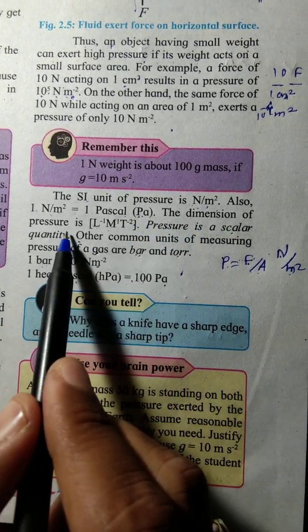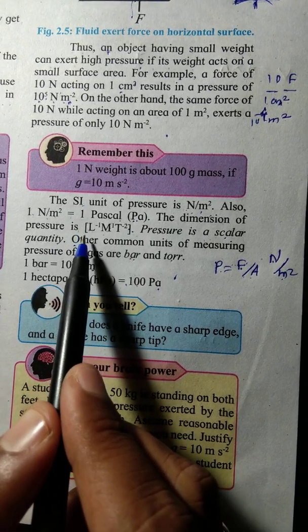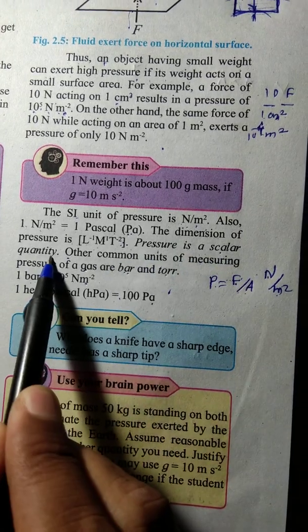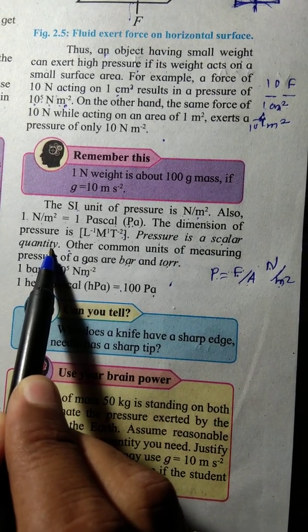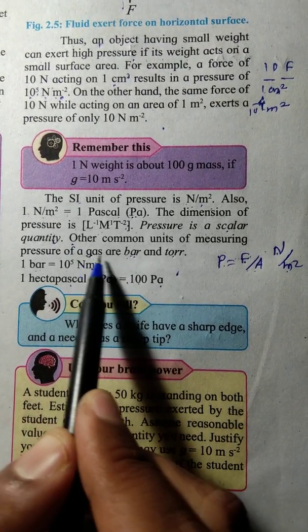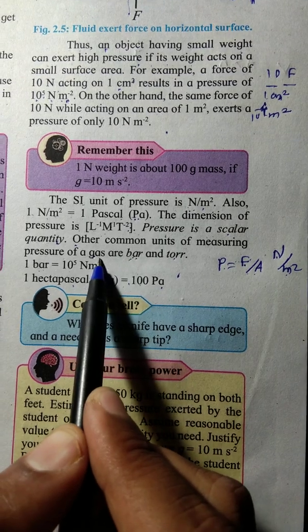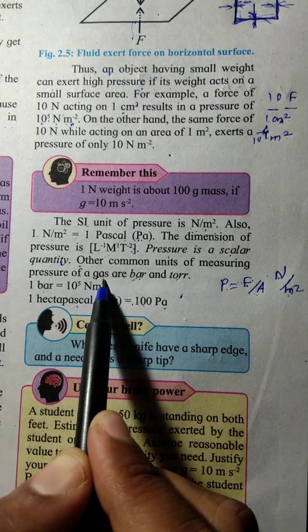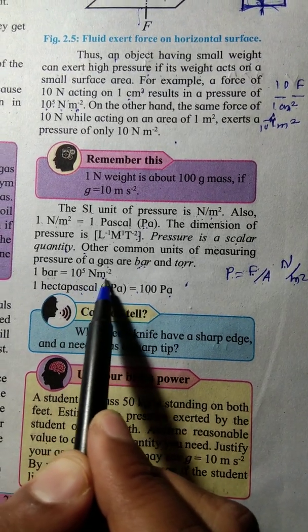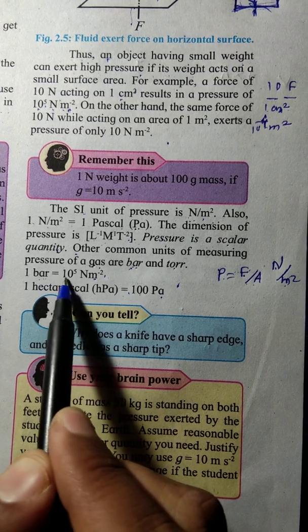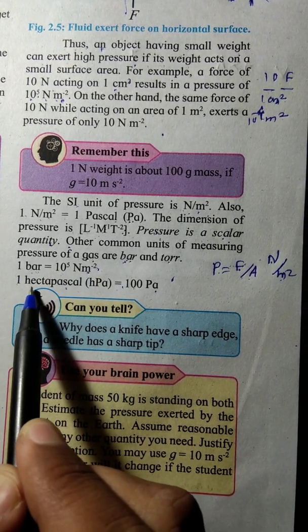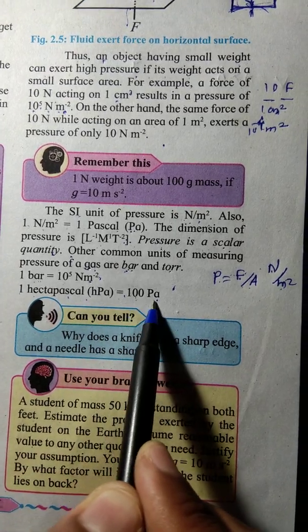The dimension of the pressure is L raise to minus 1, M raise to 1, T raise to minus 2. Pressure is a scalar quantity, not a vector quantity. And for gas pressure in car tires, 1 bar is equal to 10 raise to 5 newton per meter square. And 1 hectopascal, that is HPA, is equal to 100 pascal.